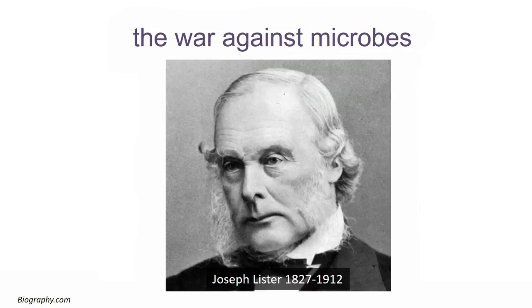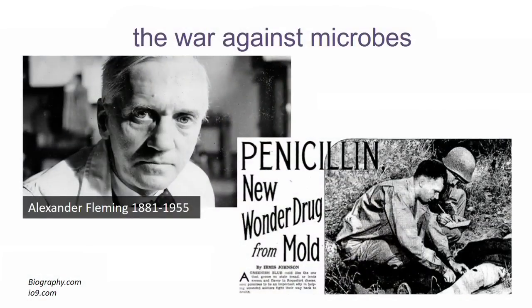The war against microbes was launched, and we thought of microbes as universally bad. Joseph Lister — of now Listerine fame — realized that most people died from surgery not because of blood loss, but because of infections. He impregnated pieces of lint with carbolic acid and put it on surgical wounds, dramatically improving surgical outcomes — one of the most impactful interventions in the history of medicine. Then Alexander Fleming discovered penicillin and introduced antibiotics for the treatment of medical diseases.